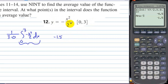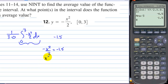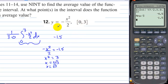Now we check: does negative x²/2 equal negative 1.5 in the interval [0, 3]? Multiply both sides by 2: x² equals 3, so x equals plus or minus the square root of 3. The positive square root of 3 is in this interval.